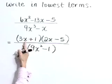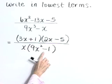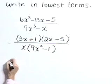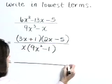Now at this point, we don't see any common factors. However, we have a difference of squares in the denominator, and that's going to factor further.